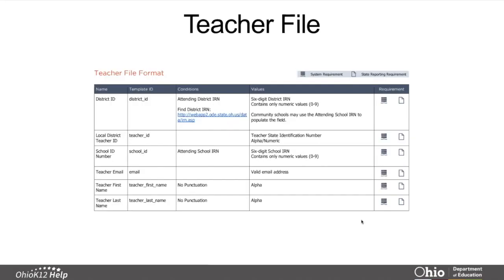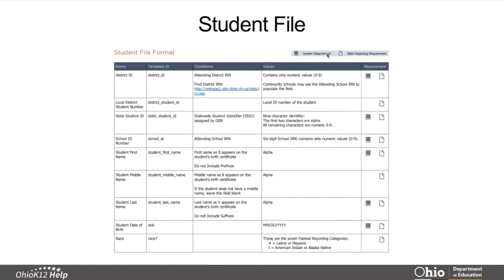For the Teacher File Template, add all of this information for your teachers when you're reloading your file. For the Student File, the icon for System Requirements means if you just want to get it in the system, this is what's required to do that. This icon represents what you need for reporting. We're suggesting and recommending that you use the All Fields Template and load the information in order to get the reports generated that you're going to need at the end of the window. Here you see District ID, Local District Student Number, and the State Student ID — fields you're going to need to enter in order to get the reports out of the system as well.